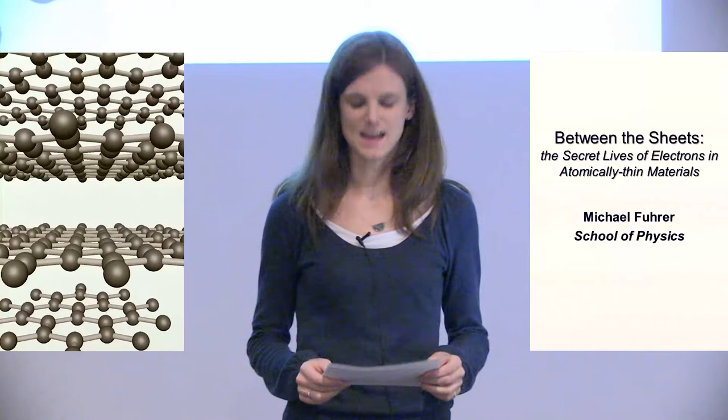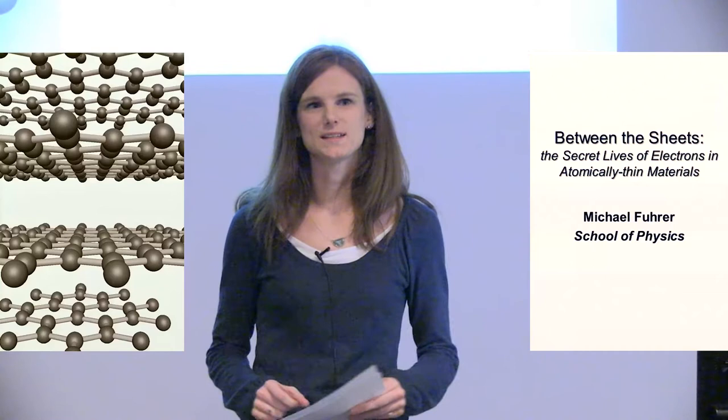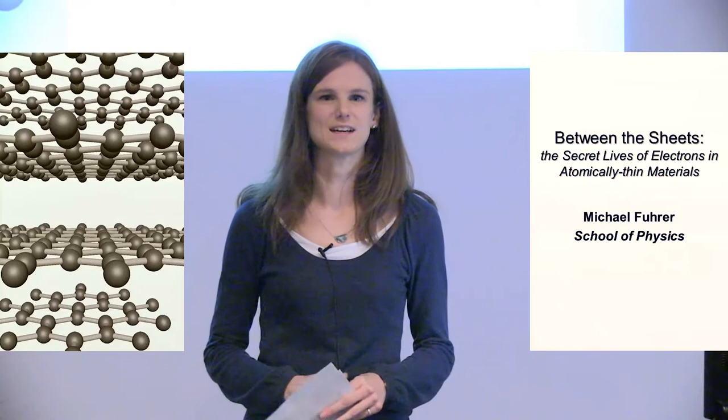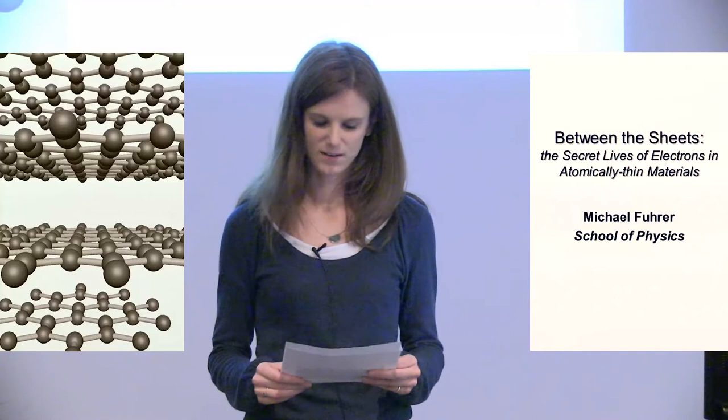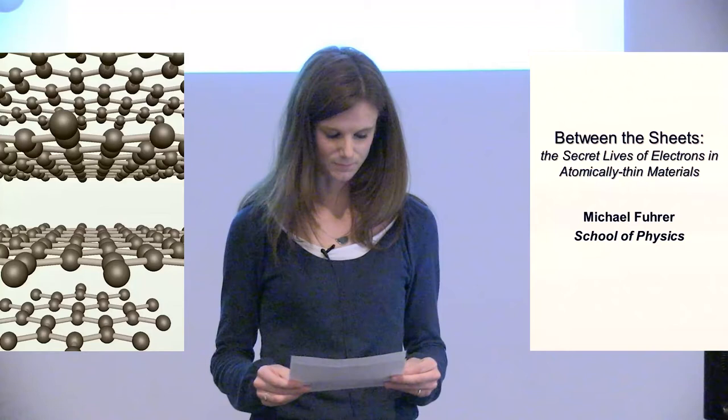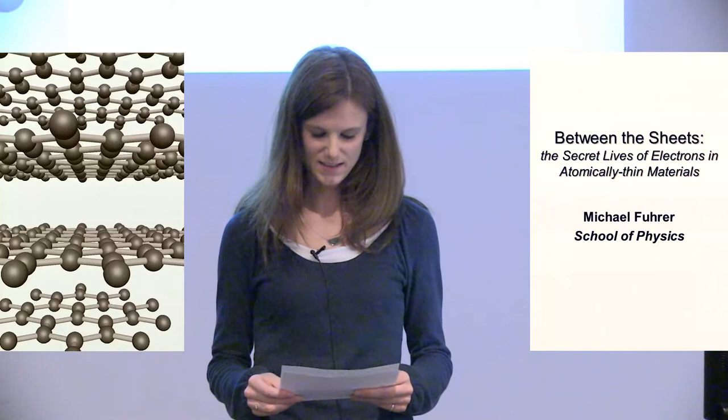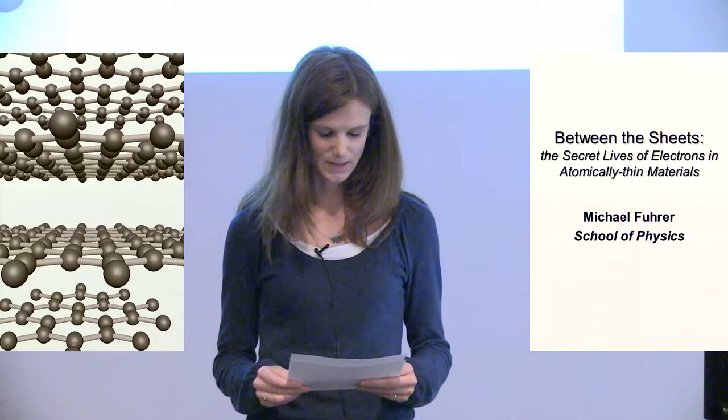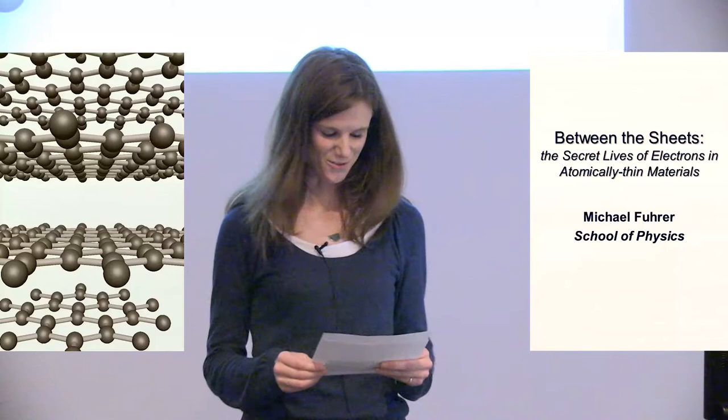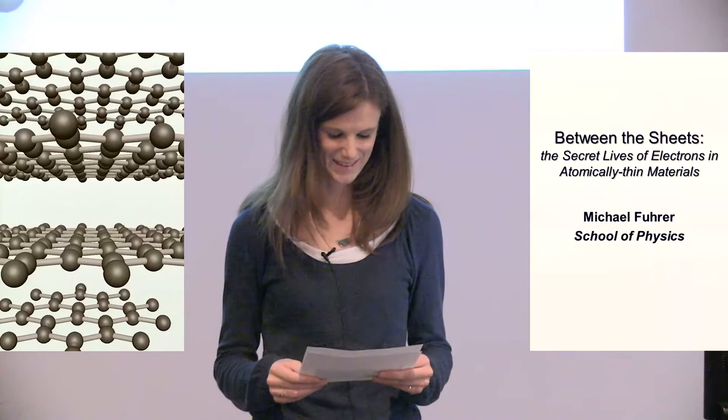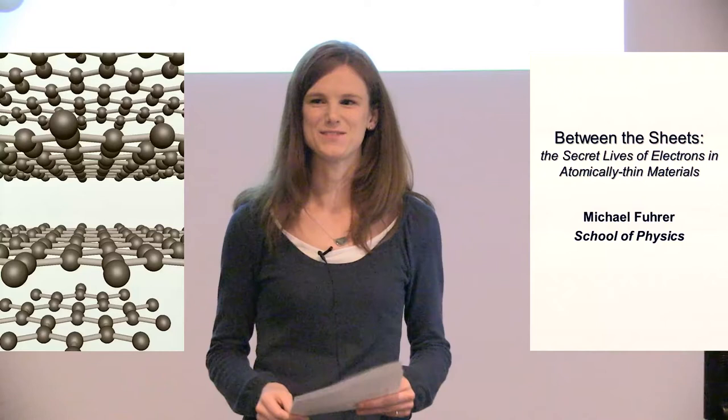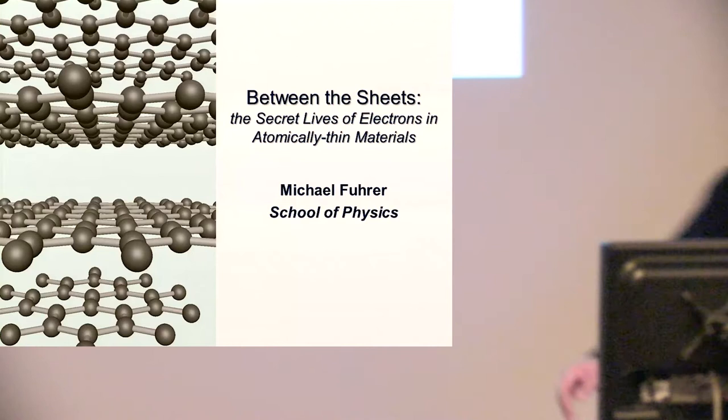Our first speaker today is Professor Michael Fuhrer. Michael began his physics education at the University of Texas before moving to the University of California to complete his PhD on electronic and thermal transport in high technetium and fullerene superconductors in 1998. In 2000 he joined the faculty at the University of Maryland where he became the director of the Centre for Nanophysics and Advanced Materials. Michael joined us at Monash on an ARC Laureate Fellowship in 2013 studying atomically thin two-dimensional materials like graphene. Since arriving in Australia, Michael has discovered that he's a birder. I remember shortly after his arrival being quite impressed by his knowledge of all the native birds on campus. But if there's one thing that Michael likes to talk about even more than birds or physics, it's wine. Please welcome Michael.